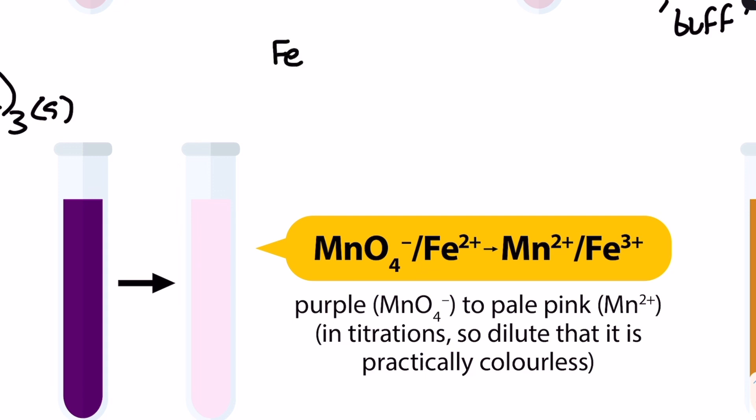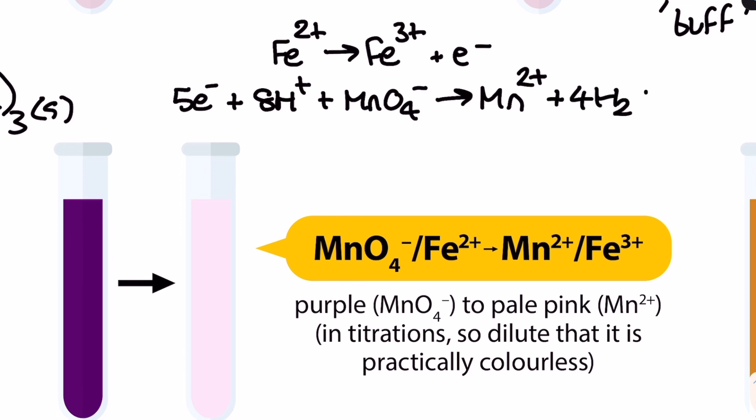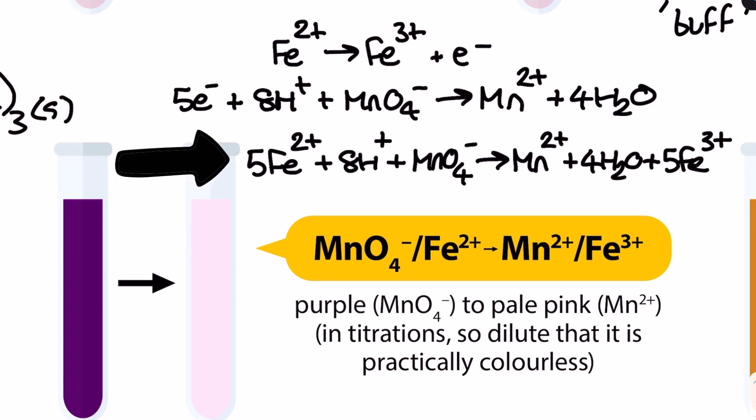This first one using manganate 7 is widely used as a redox titration. The overall equation is assembled from the two half equations that you can see me drawing on screen now which I do recommend you learn by heart but you should also be able to assemble them correctly knowing that acidic conditions are used and I've got a tutorial for that which I'll drop in the video description. In this overall equation the iron II is oxidized to iron III and the manganese is reduced from a plus 7 oxidation state in the MnO4 minus to a plus 2 oxidation state represented by the Mn2 plus ion.